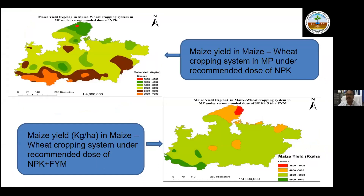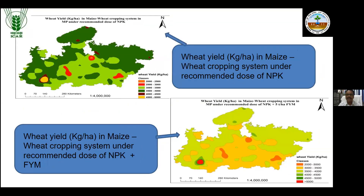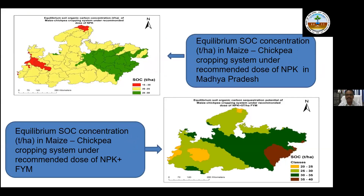Similarly, we mapped wheat yields under the maize-wheat cropping system with and without farmyard manure. Looking at the soil-wise equilibrium soil organic carbon concentration in Madhya Pradesh: when farmyard manure is present, the carbon concentration range has gone up — soil carbon stock has increased. The increase is particularly notable in the eastern part of Madhya Pradesh, which receives more rainfall — this region benefits more from higher carbon concentrations.